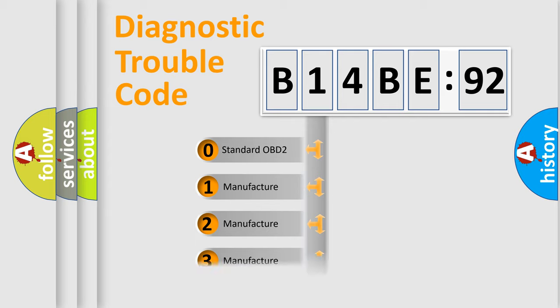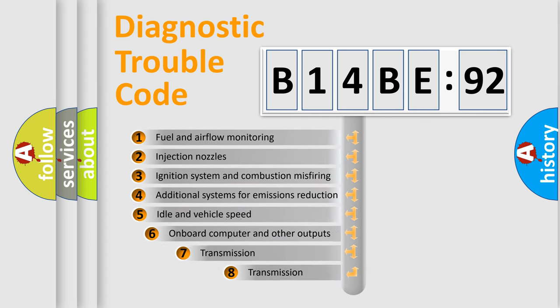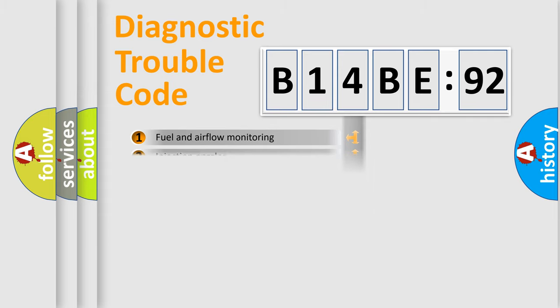Only the last two characters define the specific fault of the group. The add-on to the error code serves to specify the status in more detail, for example, a short to the ground. Let's not forget that such a division is valid only if the second character code is expressed by the number zero.